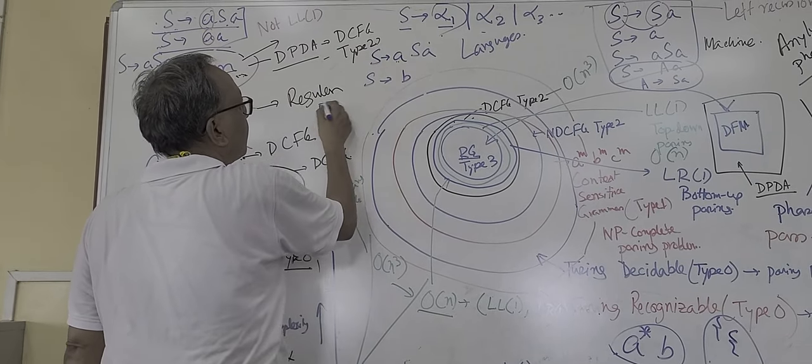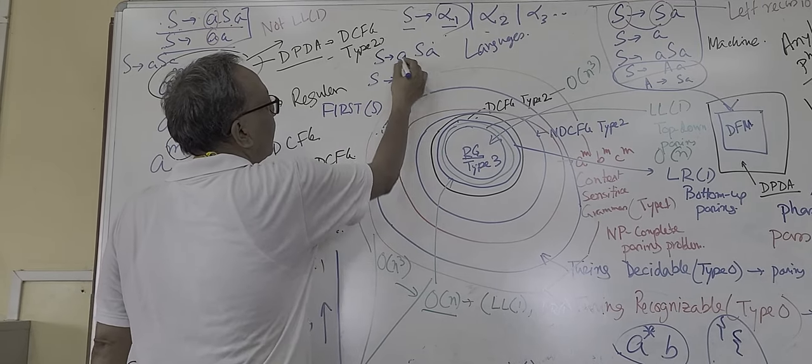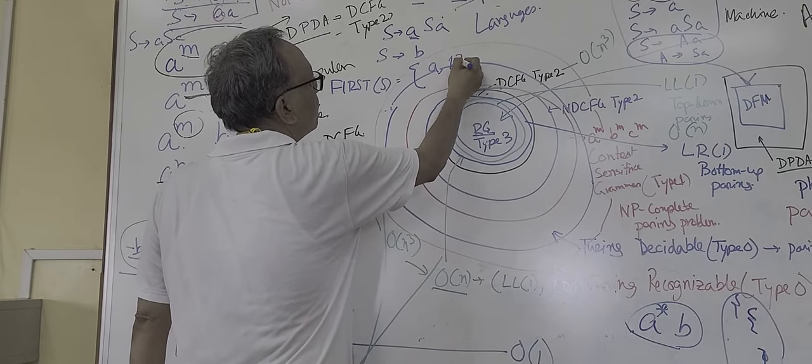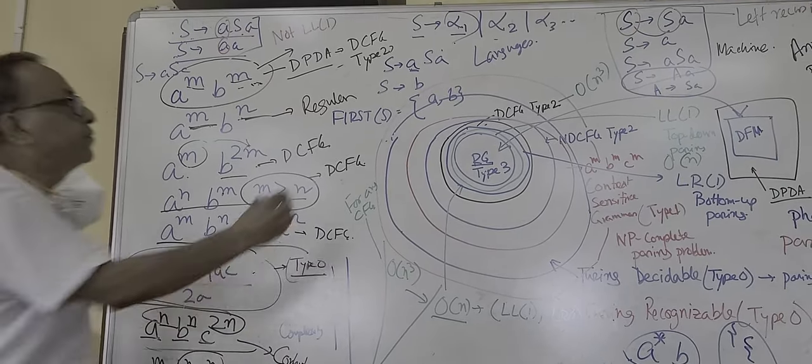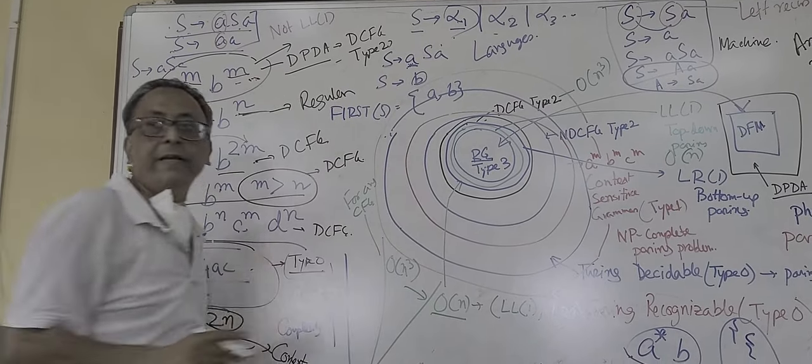What is first of this? First of S is A comma B, because from this rule it can go A and this could be B.